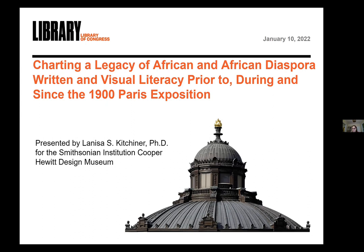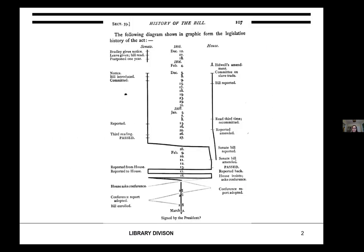Tellingly, in an excerpt from chapter 12 of his dissertation entitled Essentials of the Struggle, Du Bois writes: 'It behooves the United States, in the interest both of scientific truth and of future social reform, carefully to study such chapters of her history as that of the suppression of the slave trade. The most obvious question which this study suggests is how far in a state can a recognized moral wrong safely be compromised?' Importantly for today's discussion, Du Bois's dissertation diagrams the evolution of the 1807 Act prohibiting importation of slaves to any port in the United States.